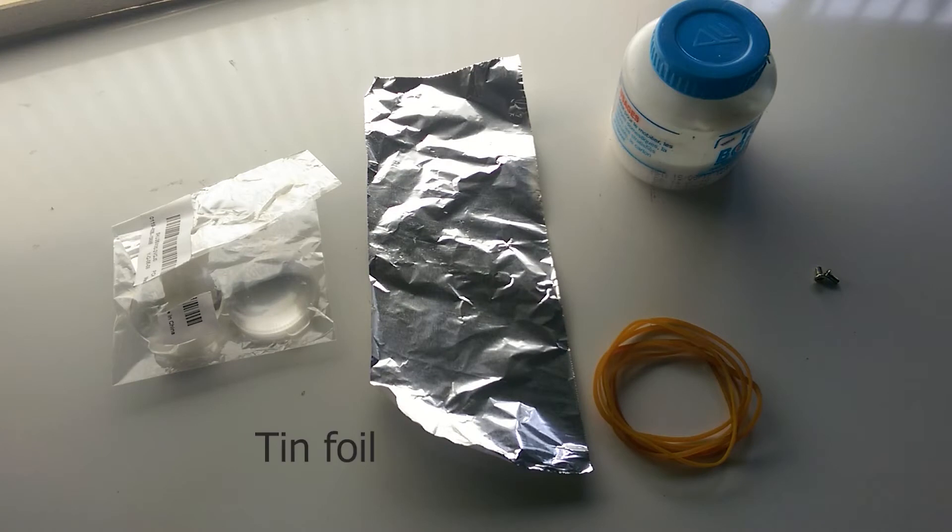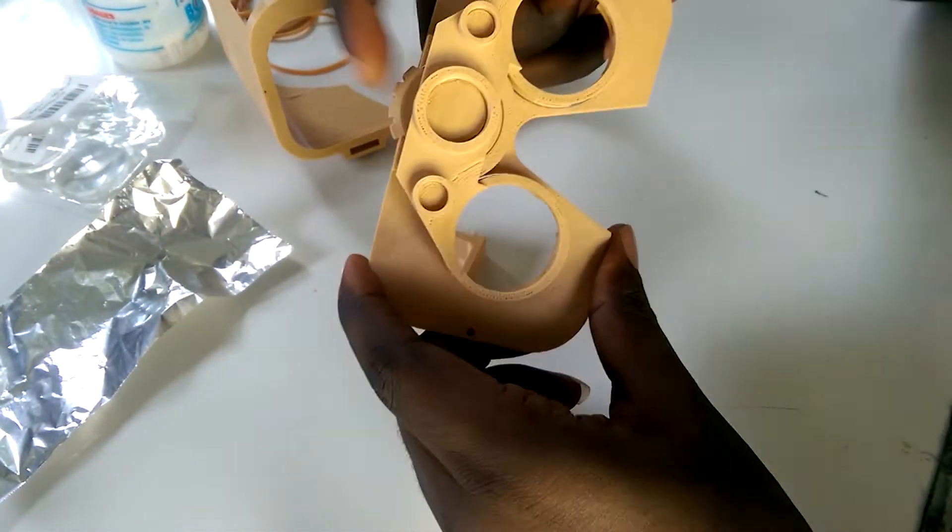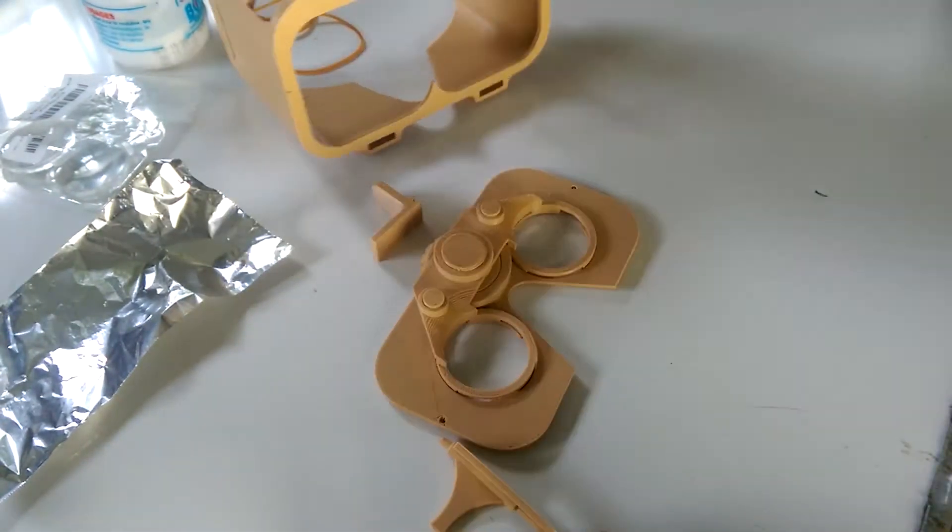You'll also need thin foil, M2 screws, and some glue to complete this build. Once the parts are printed, putting them together is a fairly straightforward process.